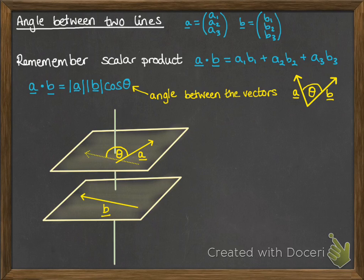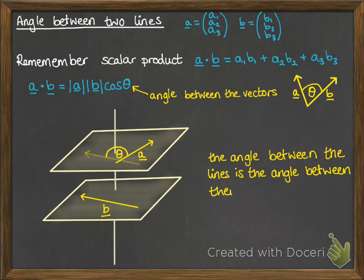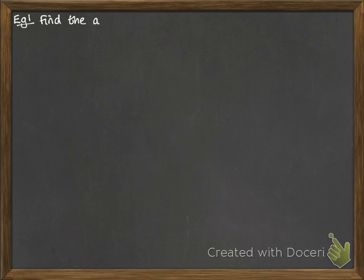Now, what that actually means is we translate that direction of B onto the plane where A is, and we're finding the angle between those two there. So when we're asked to look for the angle between the lines, what we're actually being asked for is the angle between their directions.